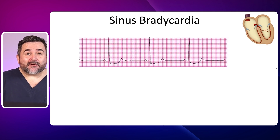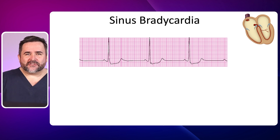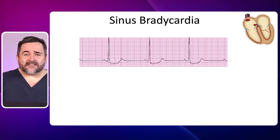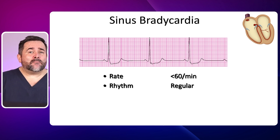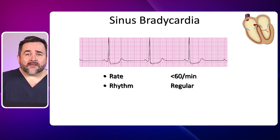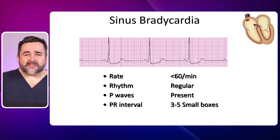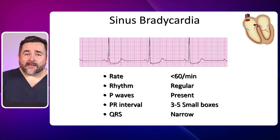Sinus bradycardia looks the same as a normal sinus rhythm, but the rate is less than 60 beats per minute. The rhythm is regular, P waves are present, the PR interval is 3 to 5 small boxes, and the QRS complex is narrow.